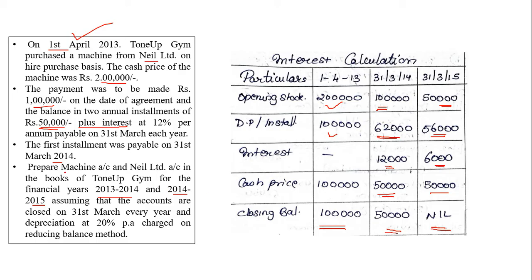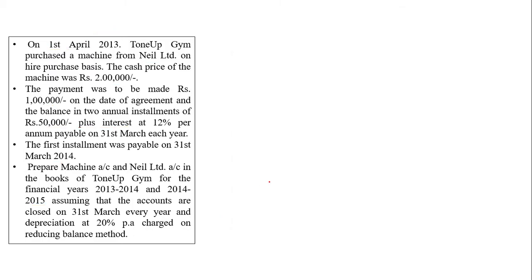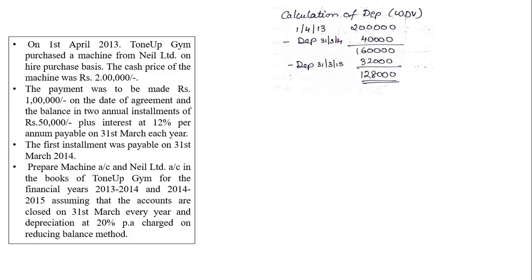Next they ask us to prepare the machinery account. Before starting the machinery account we need to find depreciation. They have told us to use 20% depreciation on the reducing balance method. Under reducing balance method, you remove depreciation on the remaining balance each year. On 1st April 2013 you bought a machine for 2 lakhs. On 31st March 2014, at 20% on 2 lakhs, depreciation is 40,000. So 2 lakhs minus 40,000 leaves a balance of 1 lakh 60,000. For the next year, on 1 lakh 60,000 at 20%, depreciation is 32,000, leaving a balance of 1 lakh 28,000.